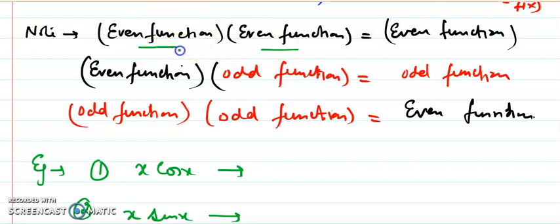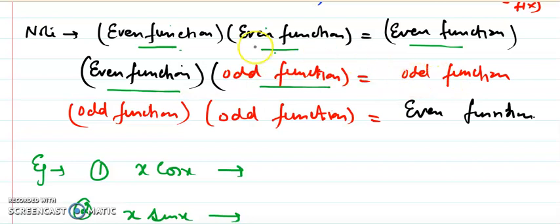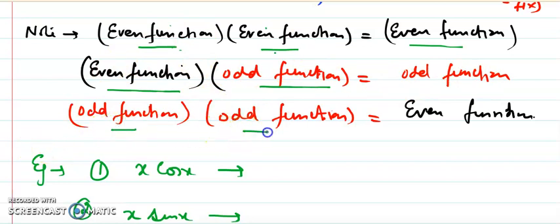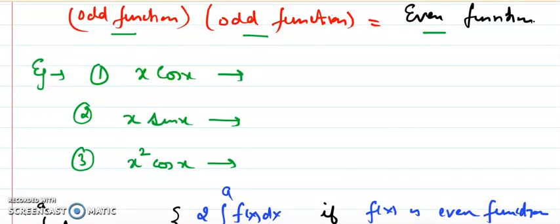Now, since in the Fourier series expansion we encounter the calculation of aₙ and bₙ involving multiplication of the function with sine and cosine, it's important to note: when two even functions are multiplied, the result is even (positive). When an even function and an odd function are multiplied, the result is odd. When two odd functions are multiplied, negative times negative gives positive, so the result is even.